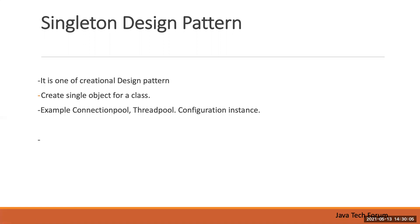Singleton Design Pattern is one of the creational design patterns, used to create objects. What is special about this pattern is that it creates only one object for a class in the JVM — it won't create more than one object. We use this pattern mainly for common objects, for example a DB connection pool. If there is only one DB in our application, then the DB connection pool will be only one for the entire application.